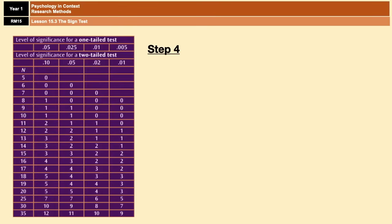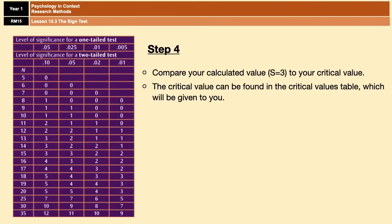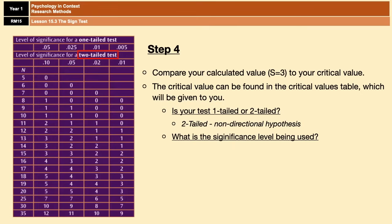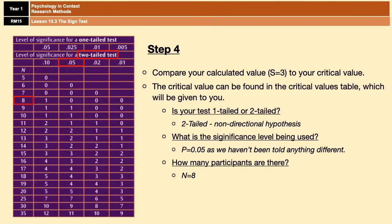And finally step four, we have to compare our calculated value to our critical value. Now the critical value can be found in the critical values table which will always be given to you. So to find the right value you have to ask yourself a series of questions. Number one, is your test one-tailed or two-tailed? We know that our test is two-tailed because we're using a non-directional hypothesis. The next question is what is the significance level being used? If you remember from previous videos, unless you are told otherwise the significance level is always 0.05, so that's the next little bit of information that we have. And then we also need to know how many participants there are. Like we worked out earlier, our N value is 8. That leaves us with a critical value of 0.